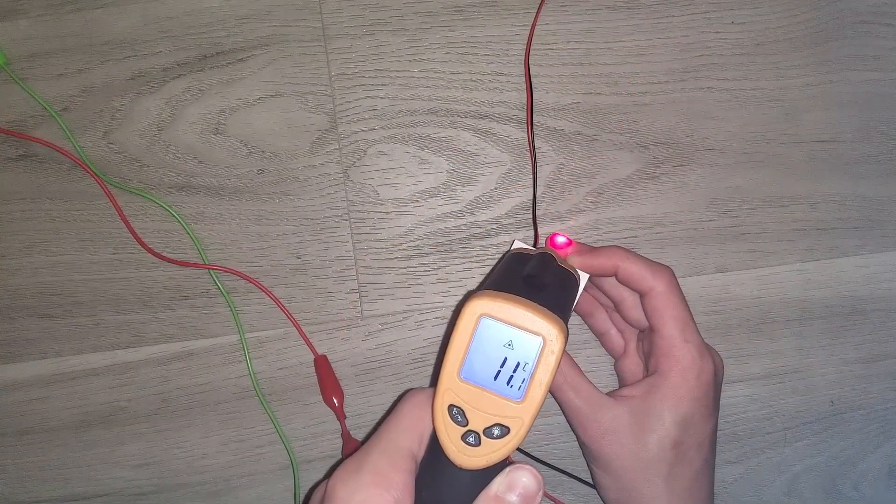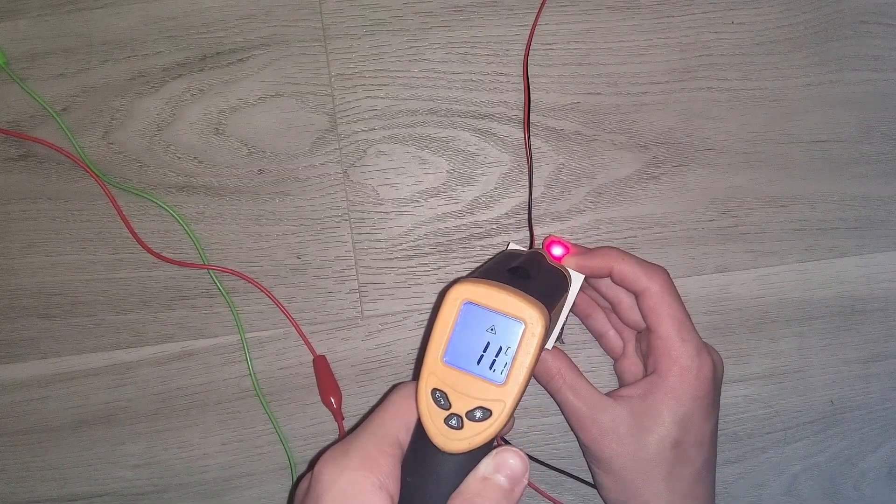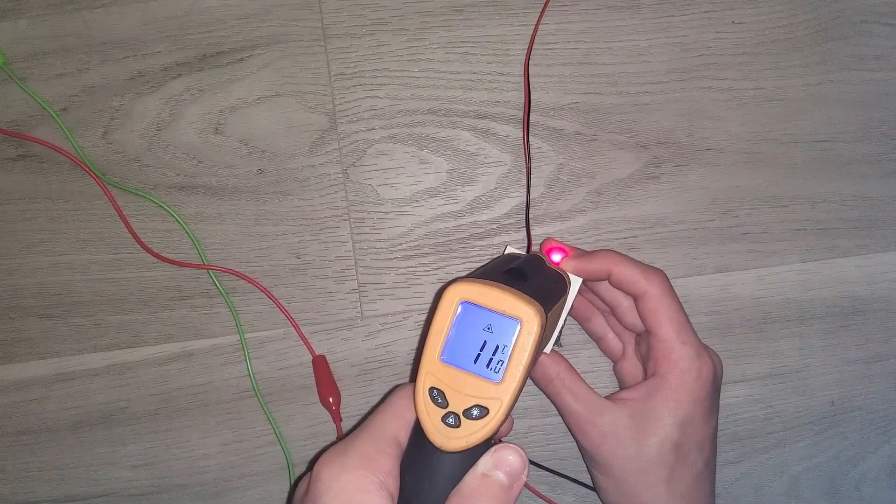With the cooler running at 7.4 volts and the fan removing heat, the temperature of the cold side is staying close to 11 degrees Celsius, or approximately 51 degrees Fahrenheit.